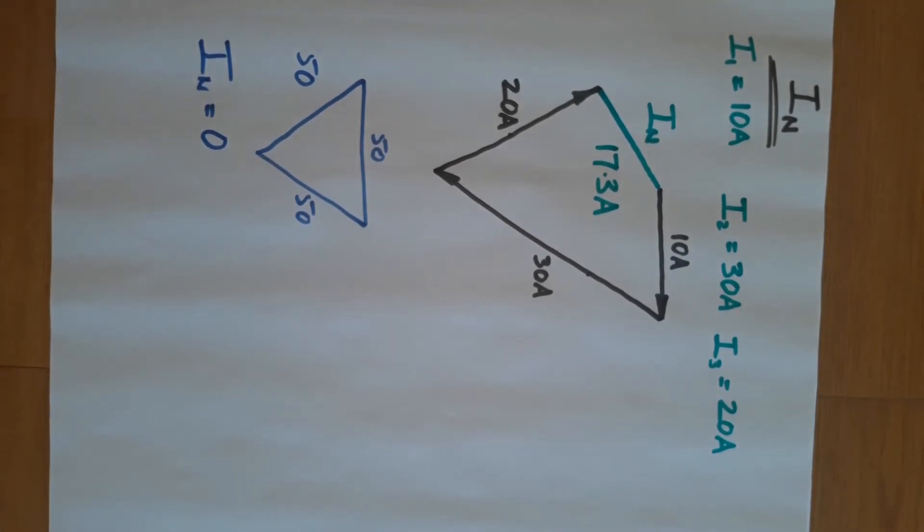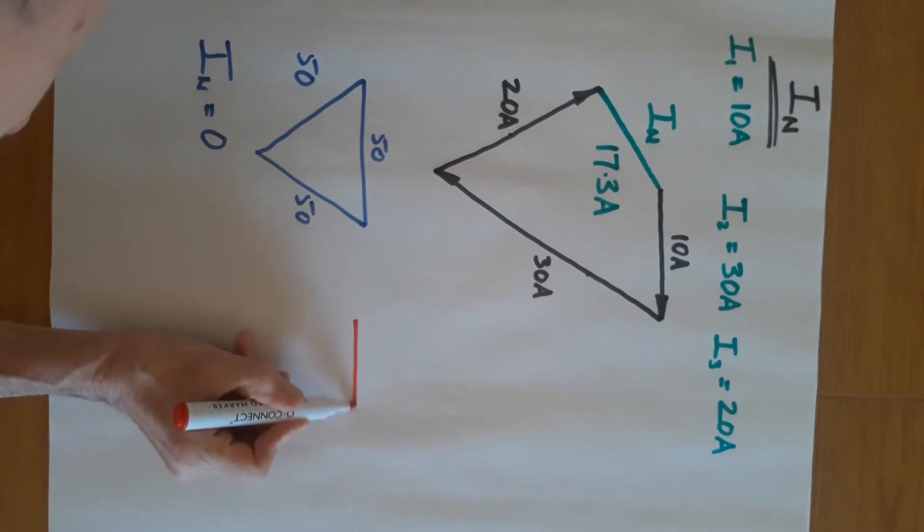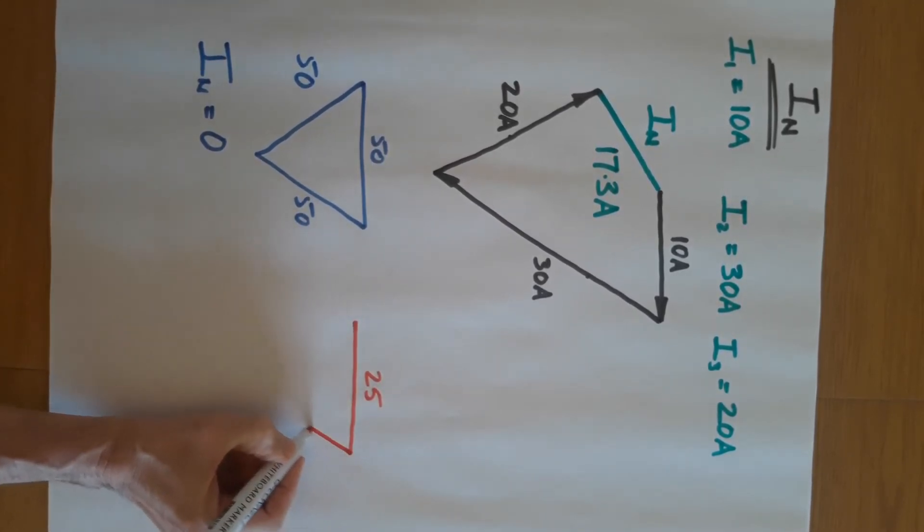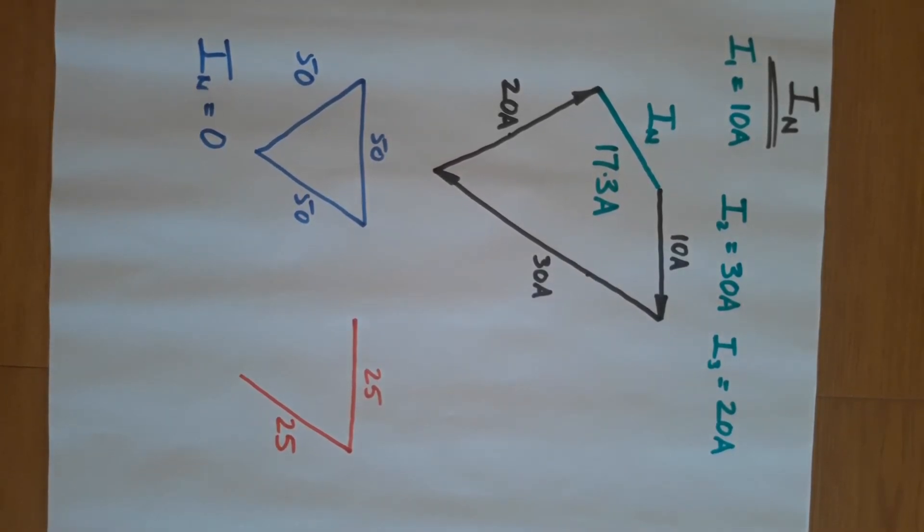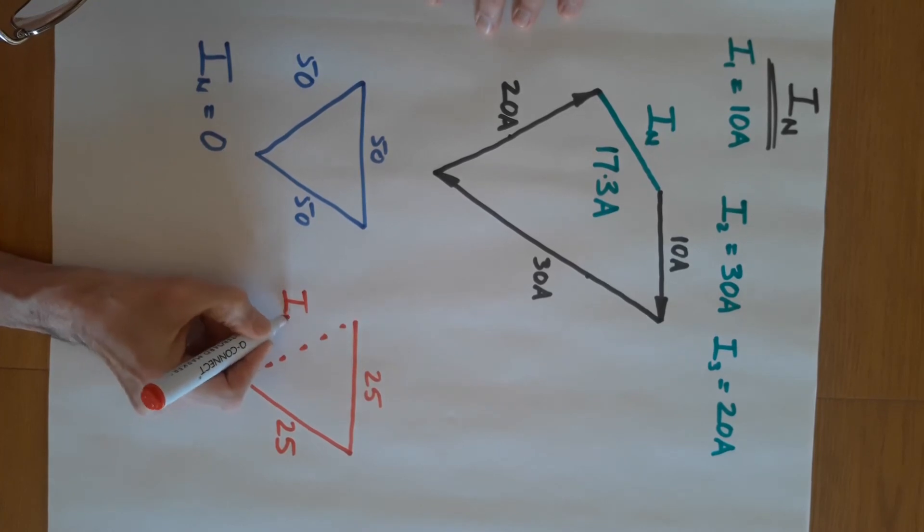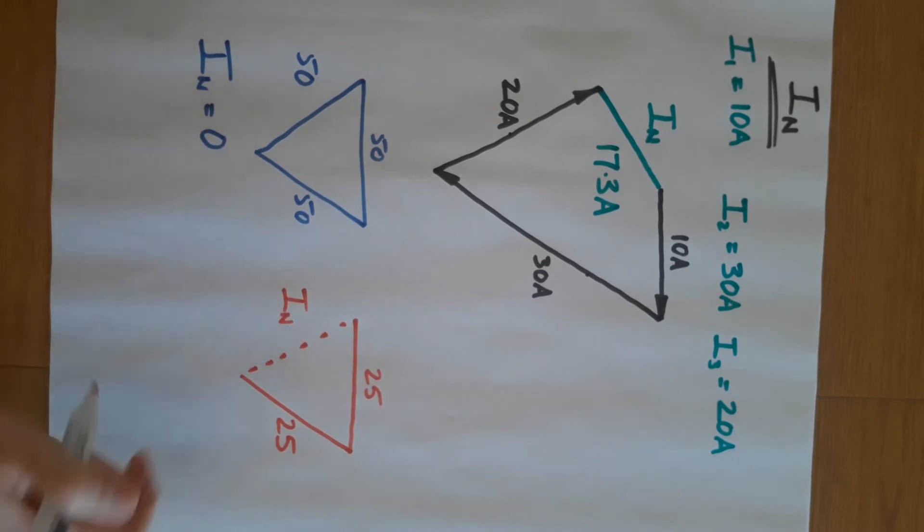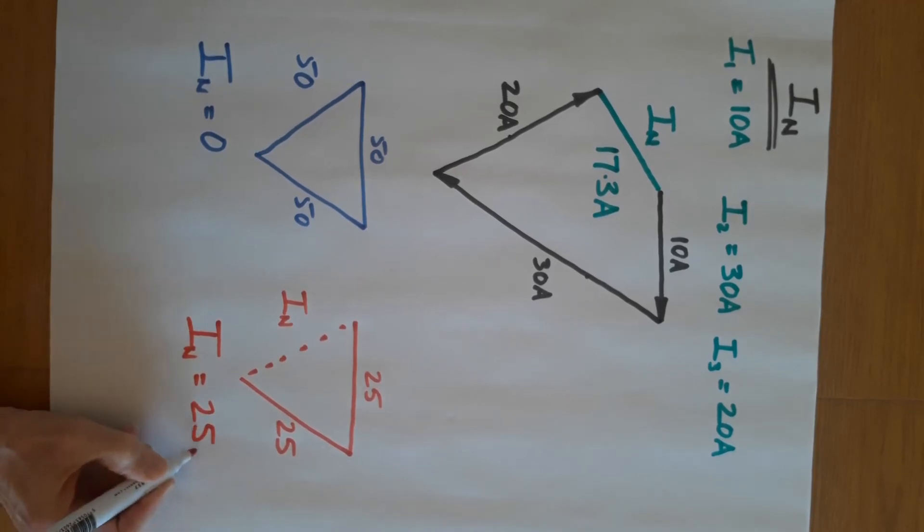One final example. Let's suppose we had 25 amps on the first two phases and nothing on the third phase. So we would draw a line to scale, this is 25, measure around 120 degrees and draw the next one, 25. Those are the two currents in the system, so the neutral current is this one. When you have two equal currents and nothing on a third phase, then the neutral current is the same as one of the other currents.